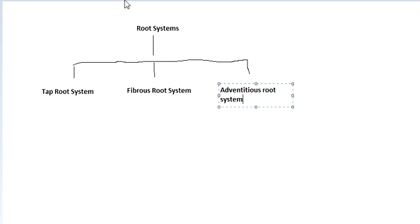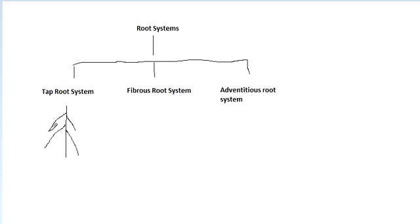Let me explain with the help of a diagram. In the taproot system, there is a main root and all the other roots develop as branches from this main root. There can be further sub-branches. This type of root system is observed mainly in dicot plants.